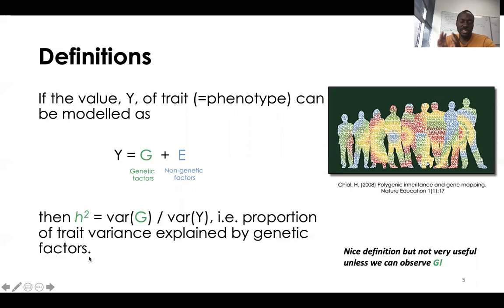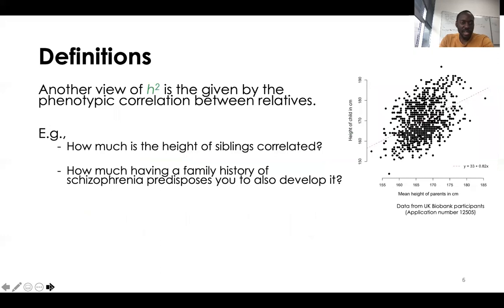Although this is a very nice definition in the sense that it is neat and self-contained, it's not very useful in a way, because unless we can observe G — and this is something we'll do in the next part of this lecture — I'd like to approach heritability through a slightly different angle.